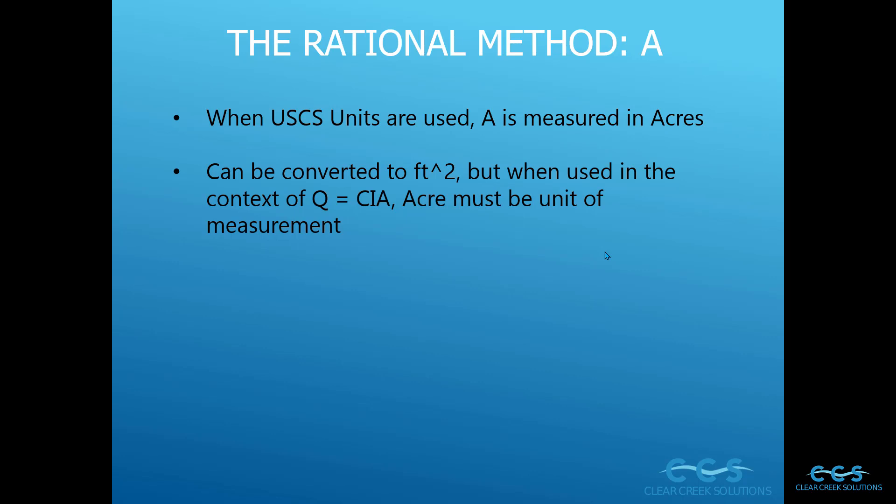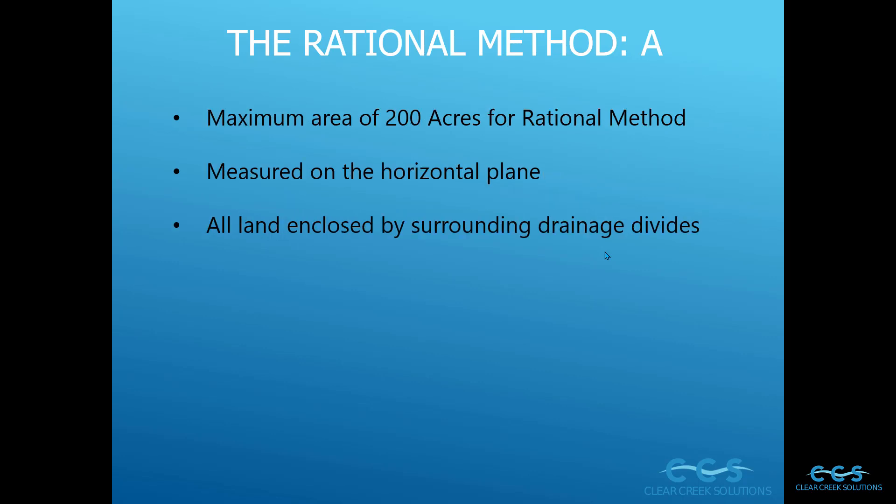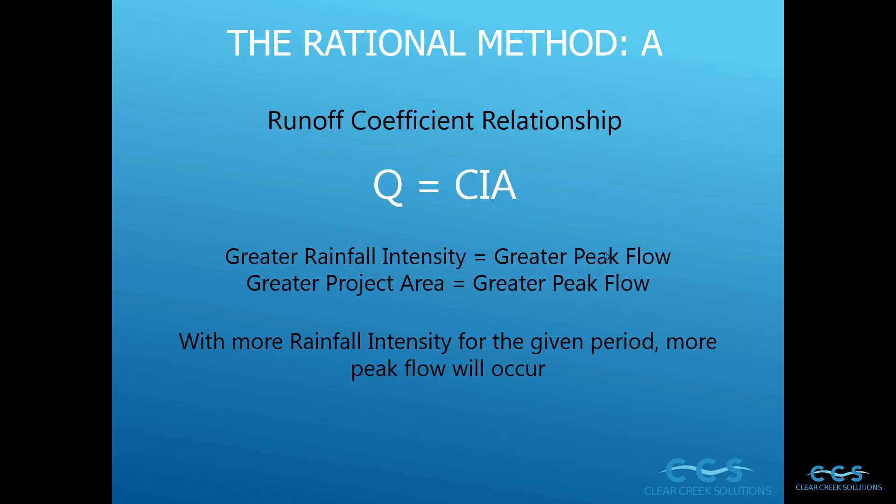When USCS units are used in the rational method, A is measured in acres — that's very important for Q equals CIA. You can convert to square feet, but in the context of the equation you want to keep that in acres. Another important thing to keep in mind is that the maximum area of 200 acres can be used for the rational method, so it's supposed to be used for smaller watershed design. It's measured on the horizontal plane, and all land enclosed by the surrounding drainage area divides is the area that will be used.